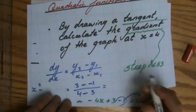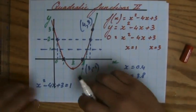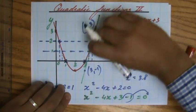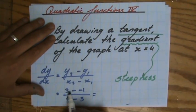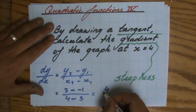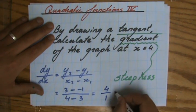Okay, there we go. And just to have a look very quickly, the tangent is going up, so the gradient should be positive, yeah? So if I get a negative gradient, I've made a silly mistake. 3 minus minus 1, that is 4. 4 minus 3 is 1.